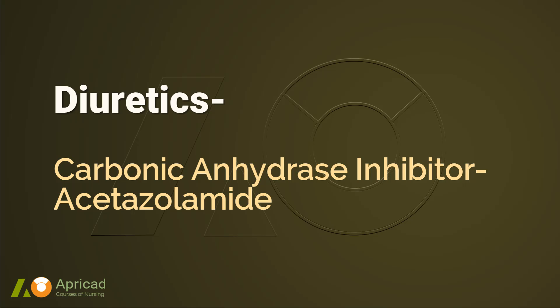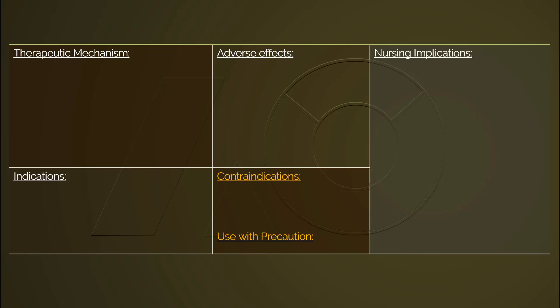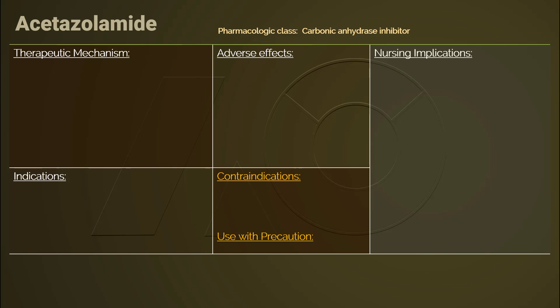Welcome to the last lecture in the series of diuretics. We are going to end this series with acetazolamide, the representative medication for carbonic anhydrase inhibitors. Acetazolamide and other carbonic anhydrase inhibitors are categorized in the class of diuretics. However, these medications are usually used for other purposes due to their less efficacy in producing diuresis.